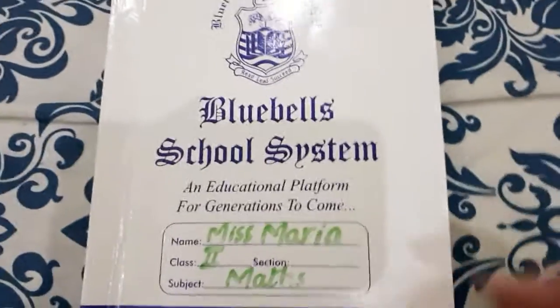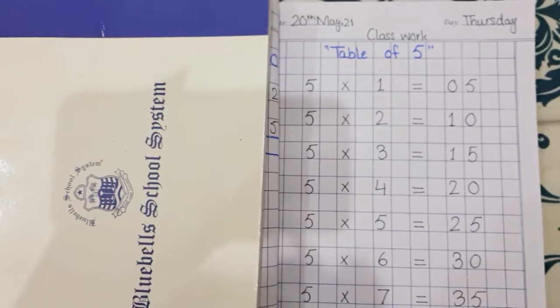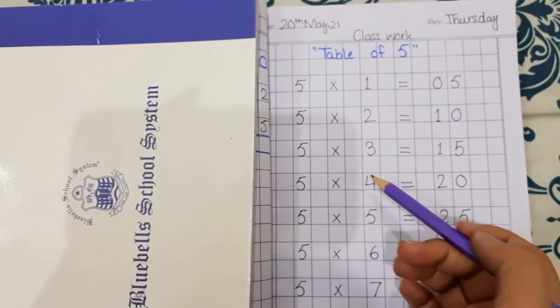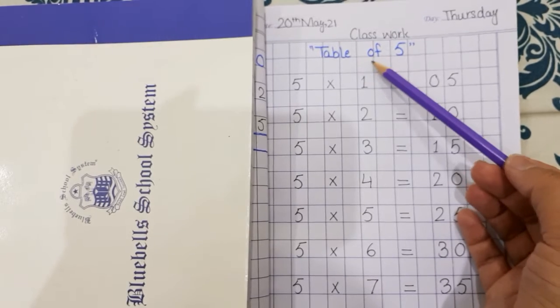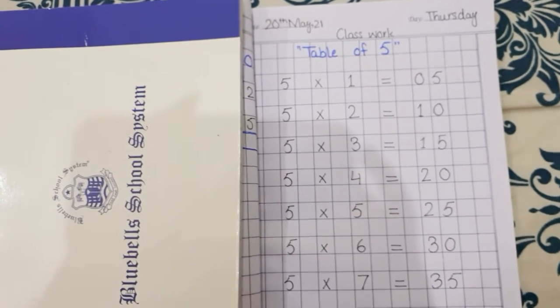First of all, take out your Maths Notebook. Then we will start our working. Okay, students. Open your Math Notebooks. Today's working is Table of 5. Our topic is Table of 5.